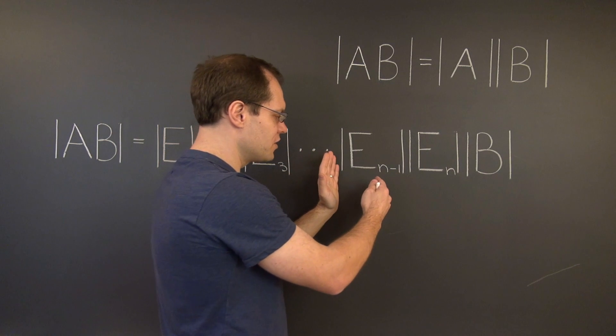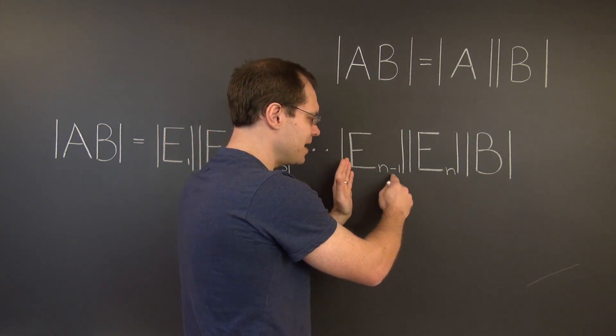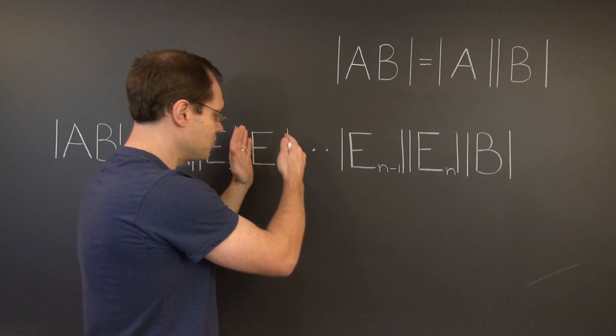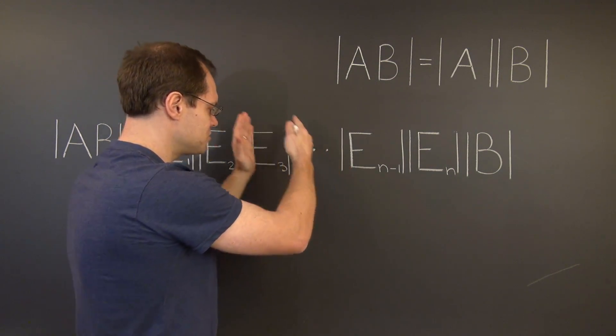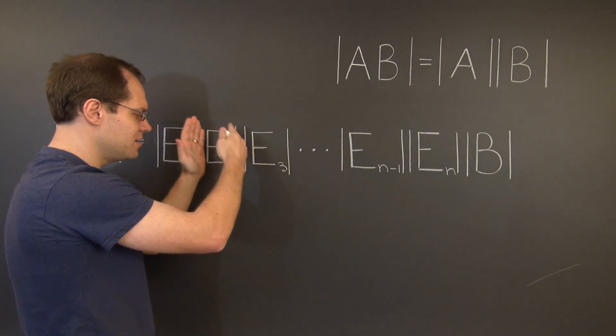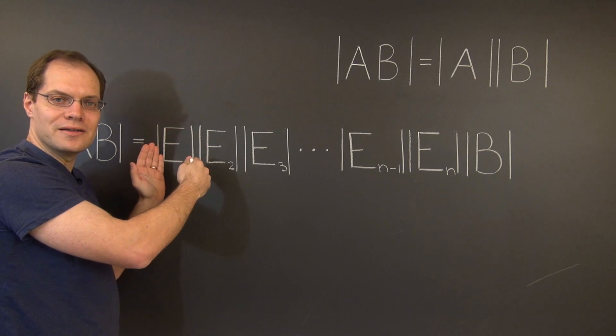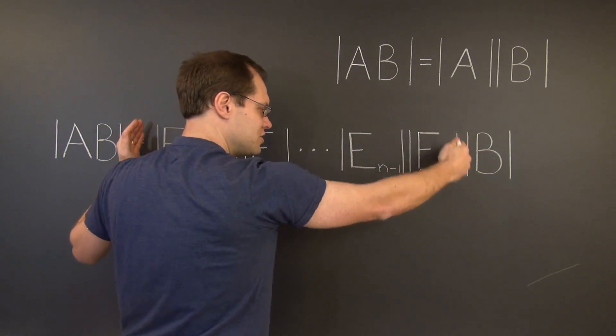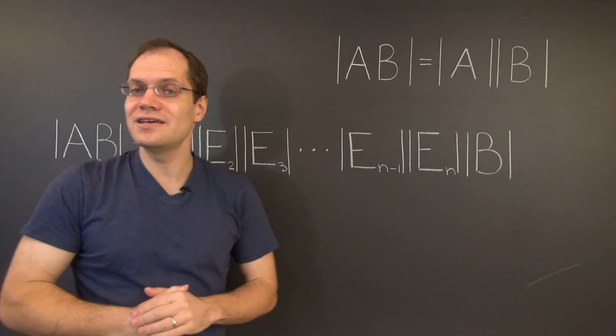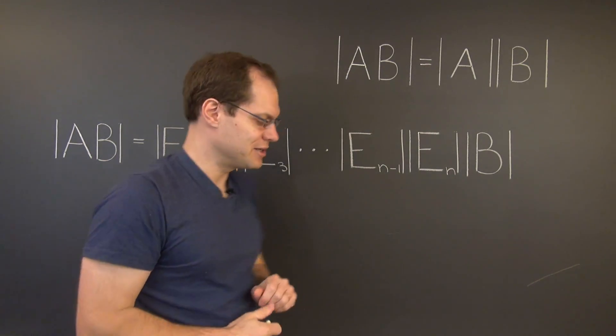So what we're going to do first, is annex E sub n minus 1 to E sub n. And then we'll annex the next matrix, and the next, and then eventually E3, E2, and E1. And at the end, we'll have the determinant of the product of the individual elementary matrices. Here we go.